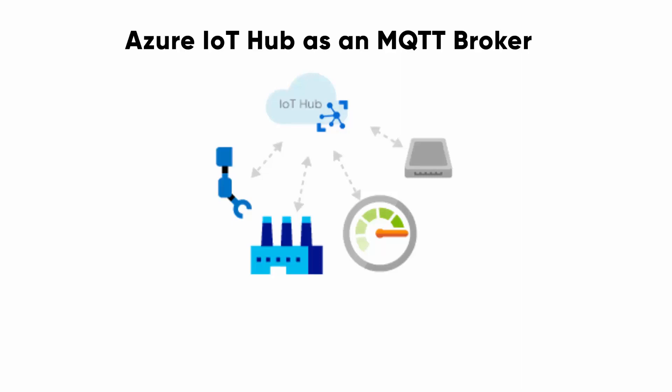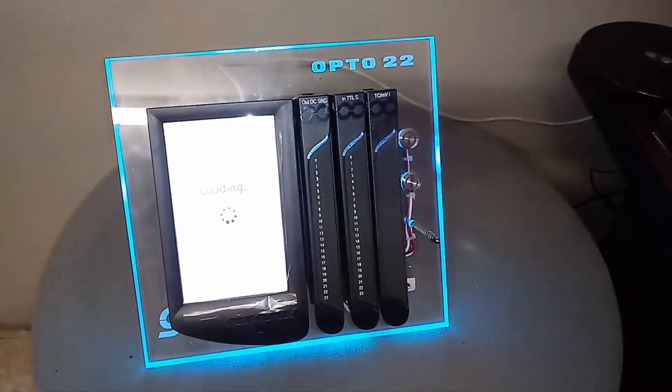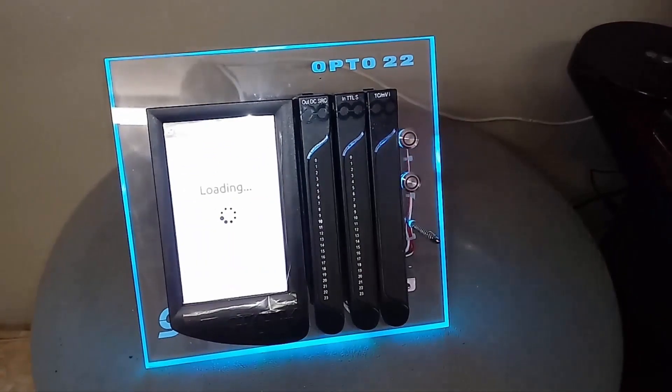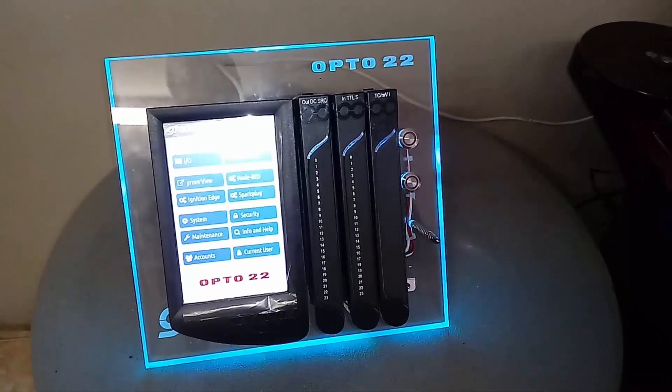Now the Azure IoT Hub is not a generic MQTT broker. In this instance, I'll be showing you how to set up your MQTT client to be able to send MQTT messages to the Azure IoT Hub as it would any other broker. To do that, I'll be using my GrooveEpic industrial controller to read temperature sensor data and use Node-RED to create an MQTT client to send the temperature data to Azure IoT Hub.